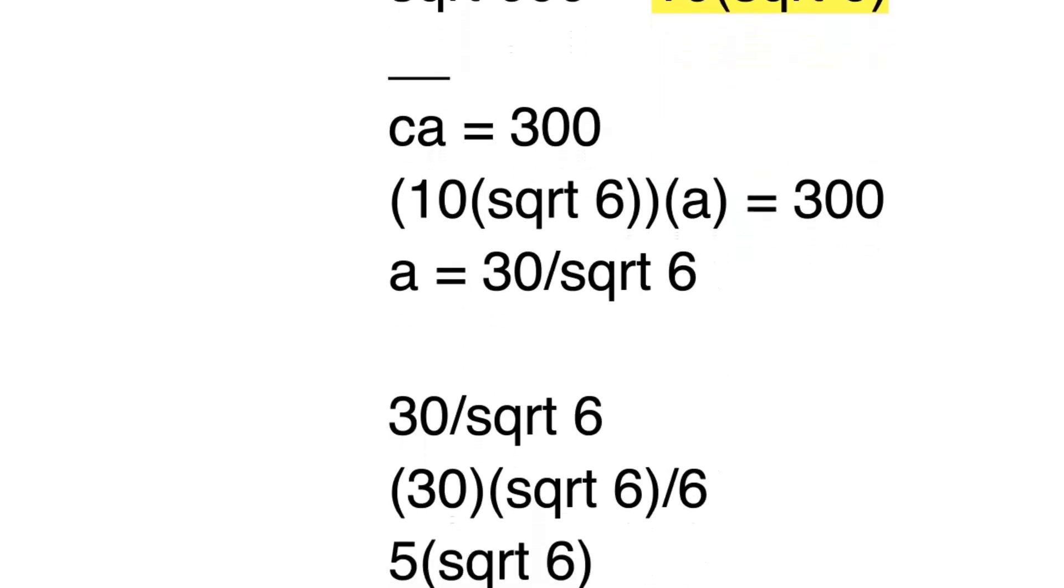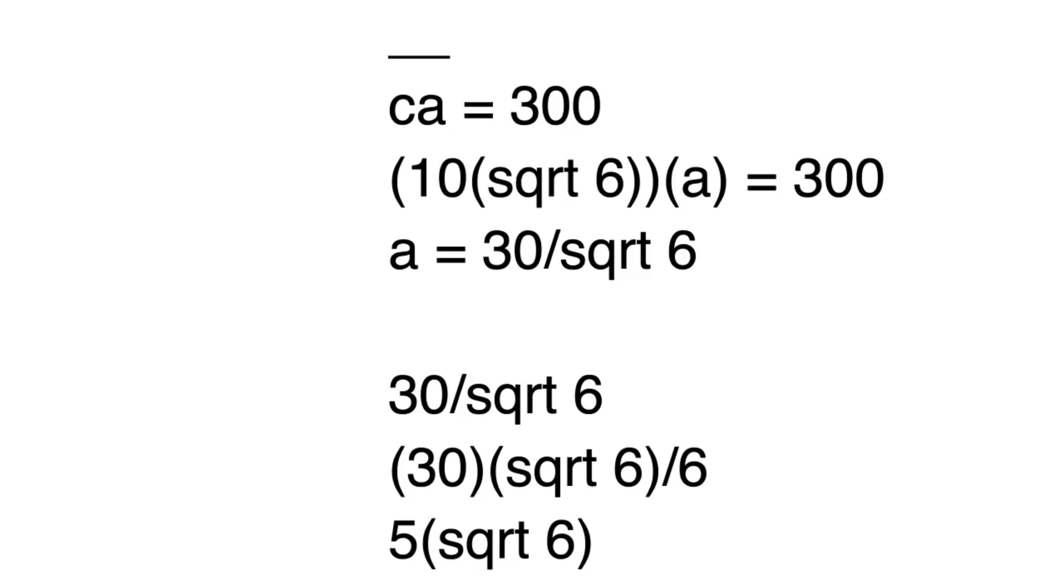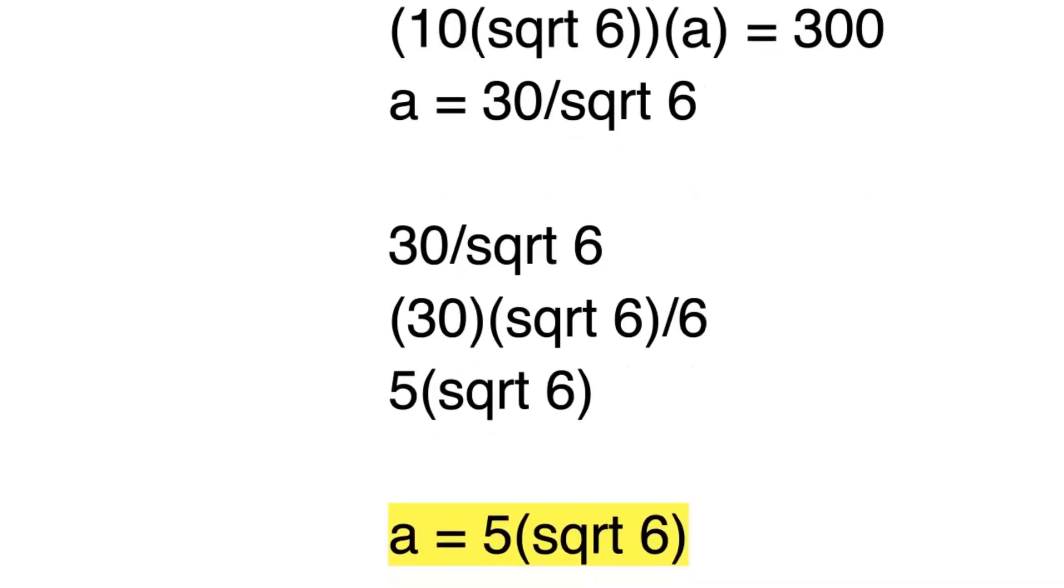30 divided by square root 6 simplifies if you multiply the numerator and denominator by square root 6. So you get 30 times square root 6 over 6. So you get 30 over 6, which is 5, so 5 times square root 6. So we know that for A, that is 5 times square root 6.